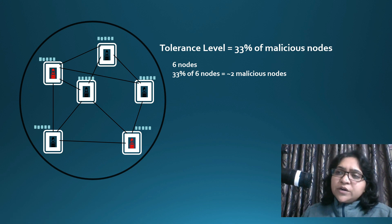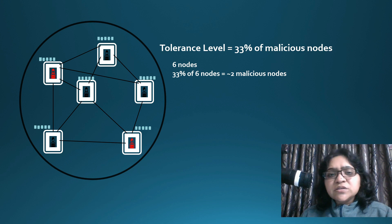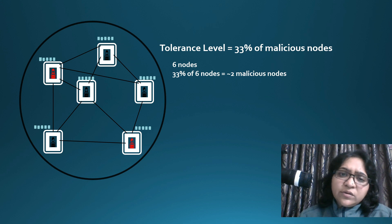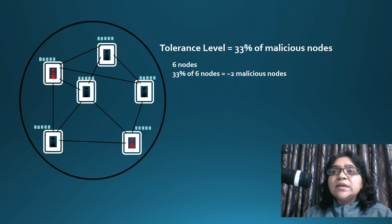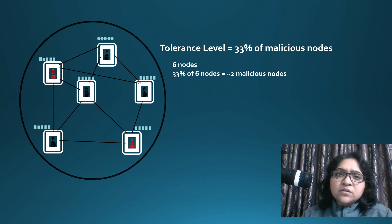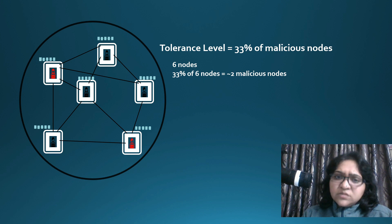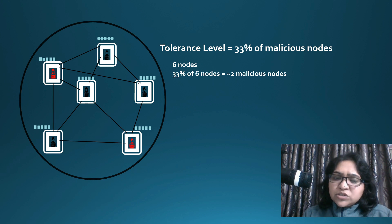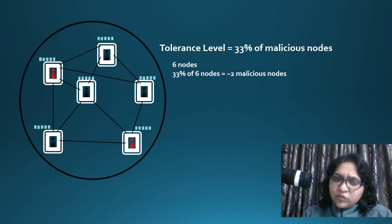The beauty of Byzantine fault tolerance is its ability to identify malicious activities and move towards the right acceptance of a particular transaction. However, the tolerance level is only 33%. If more than 33% of nodes are malicious, this fault tolerance consensus mechanism will not work, because if four out of six nodes provide false information, the commander will go in the wrong direction, affecting the overall transaction decisions.